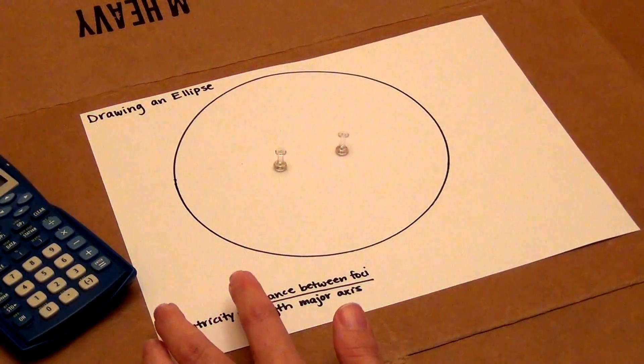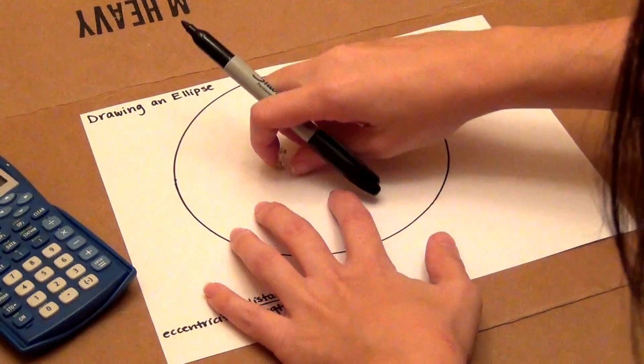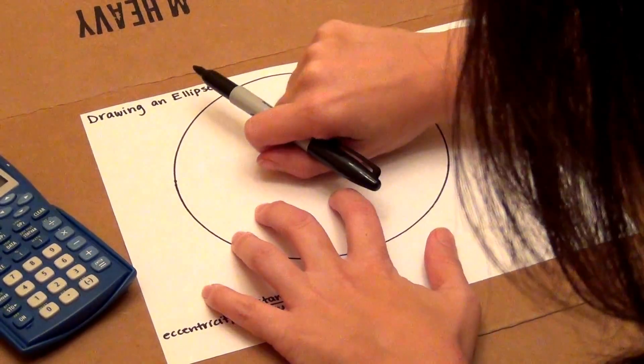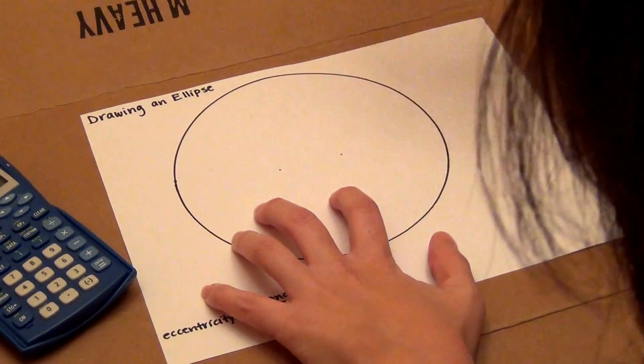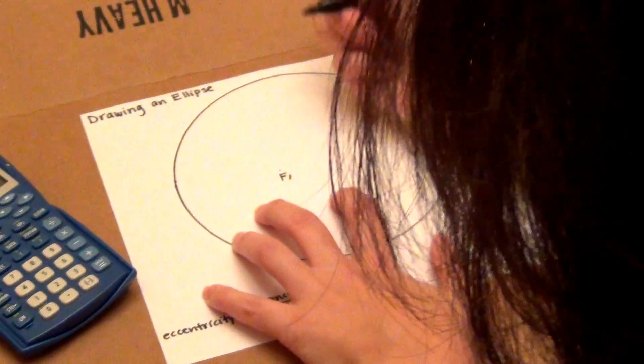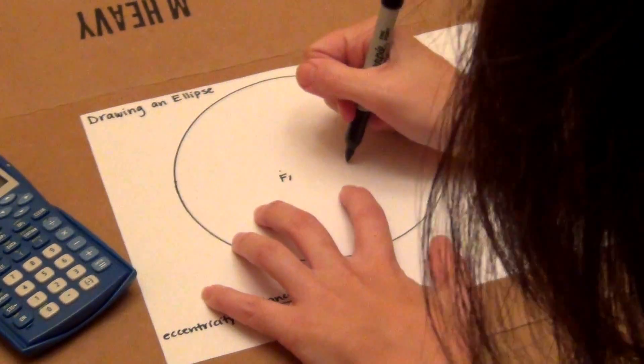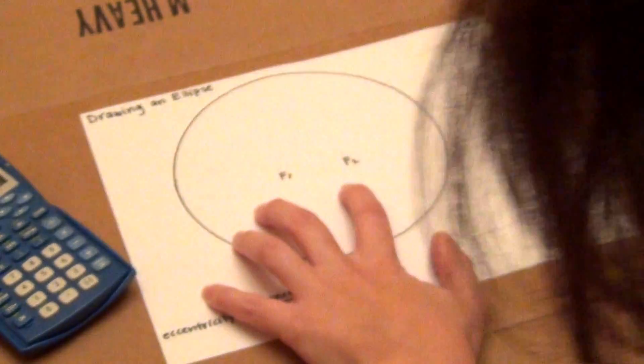And now you have an ellipse. Once you have the ellipse drawn, you can take out the thumbtacks and I'm going to label this one F1 for foci 1 or focus 1 and F2 for foci 2 or focus 2.